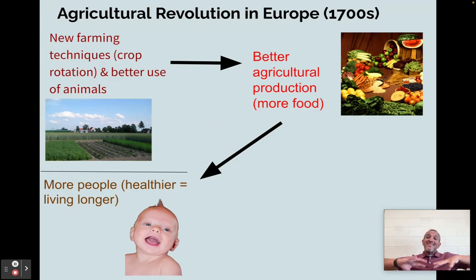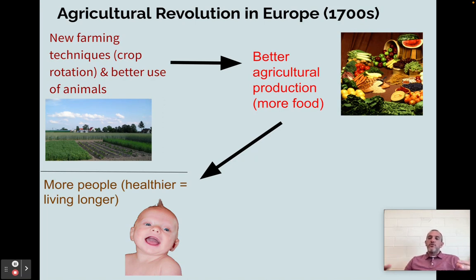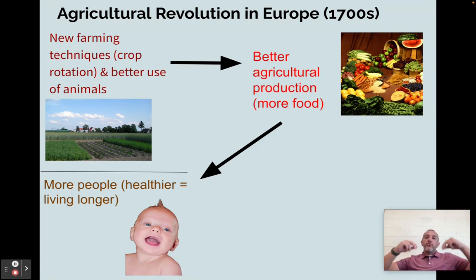The first piece of this, and what really leads to a lot of it, is what's called an agricultural revolution. When you see 'revolution,' it just means a big change. Around the 1700s in Europe — especially in England and Great Britain — new farming techniques were developed. People learned how to rotate crops so you don't ruin the soil, new fertilizing techniques, better watering techniques, and better use of animals through selective breeding to produce bigger and stronger animals. These new farming techniques led to an increase in production — more food.